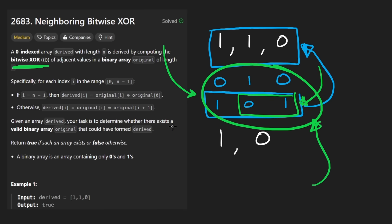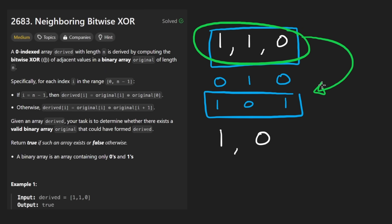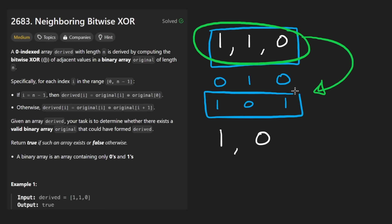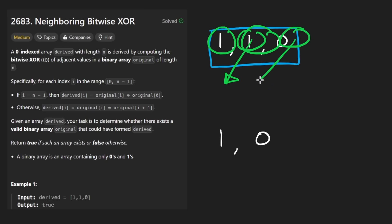So now I can finally get into what the question is asking. Given the derived array, is it possible for us to create the original one? We don't actually have to create it, but is it possible for one to have existed that could create this array given that XOR rule? At first you might think — what could a counterexample possibly be? Because these two elements will decide this one, and the next two elements will decide the next.